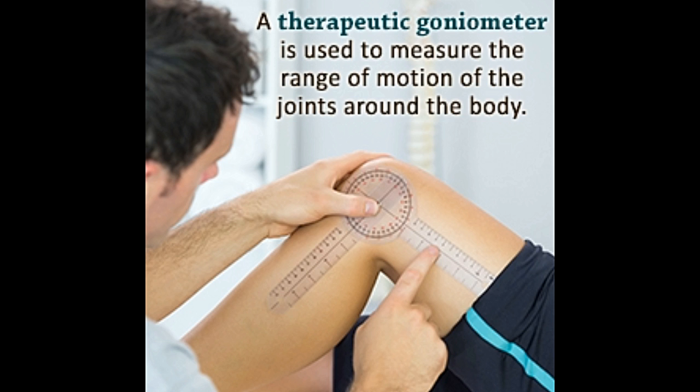This article lists out the types of goniometers. Etymology: goniometer is derived from two Greek words — gonia, meaning angle, and mitron, meaning measurement. A goniometer is a measuring device, but what does it measure?